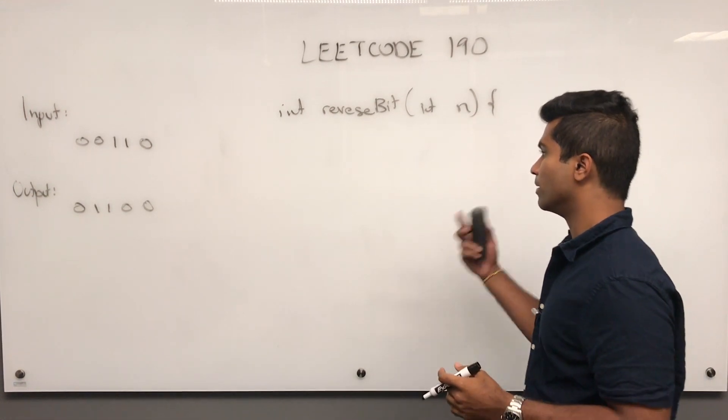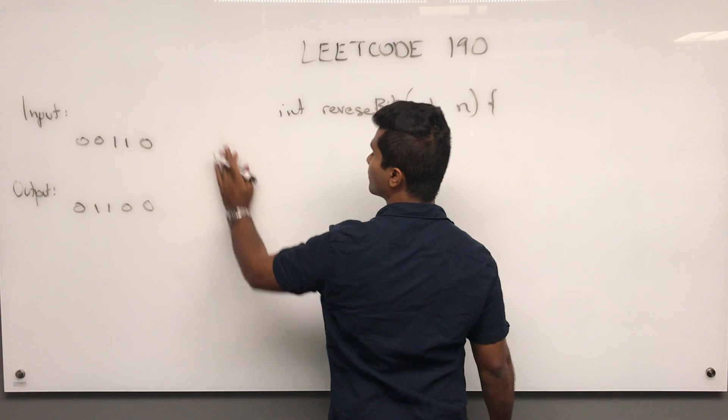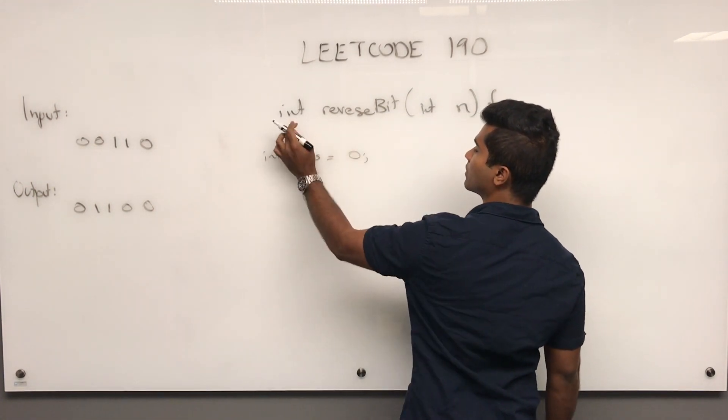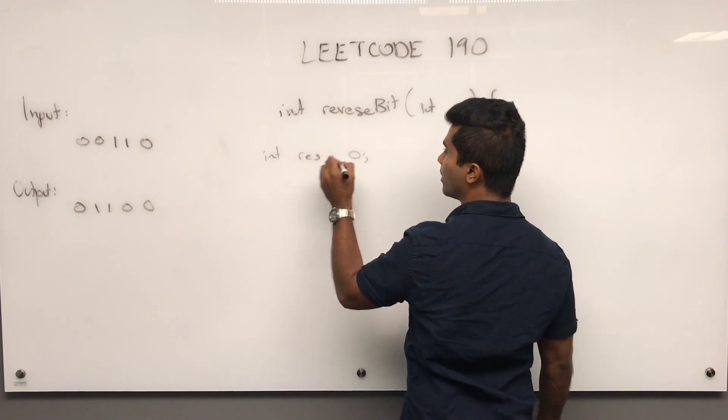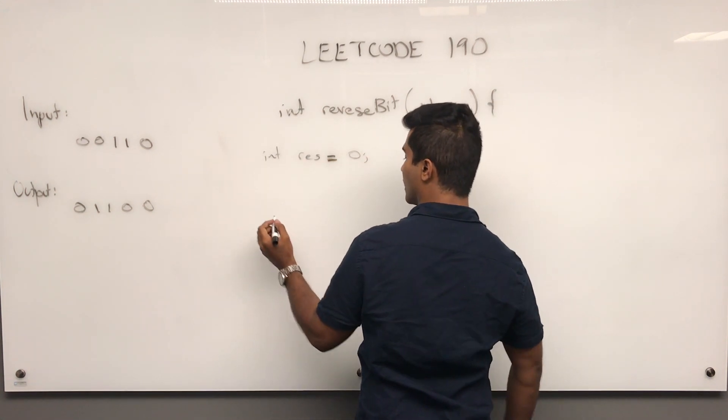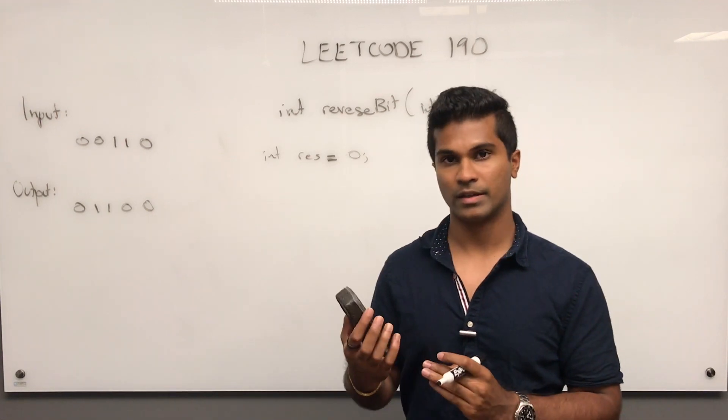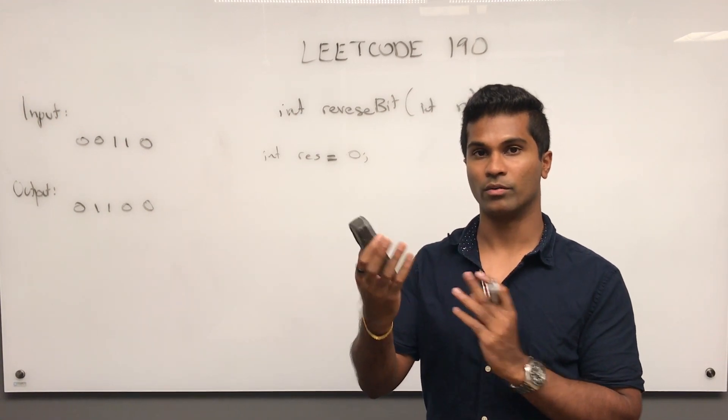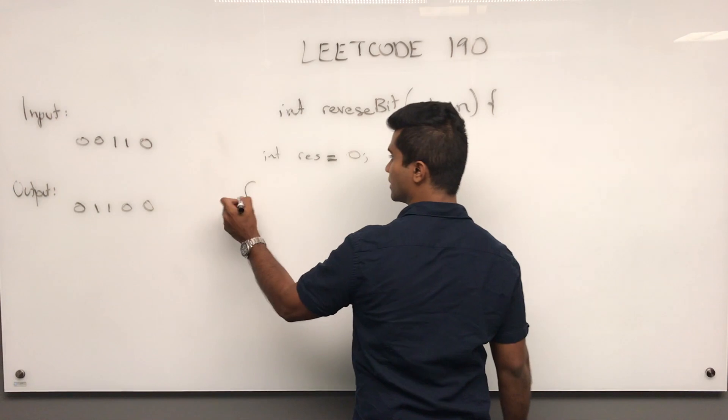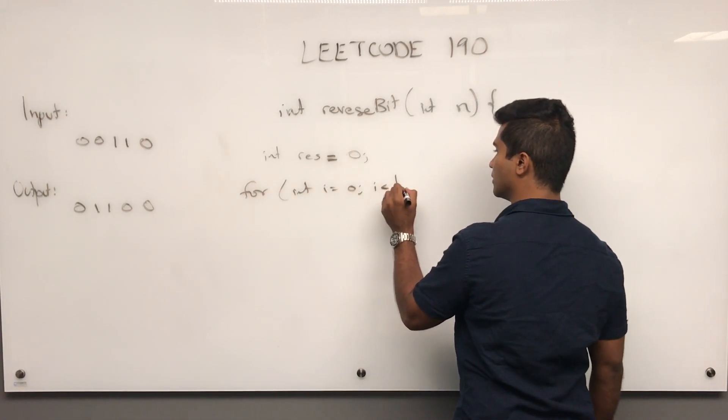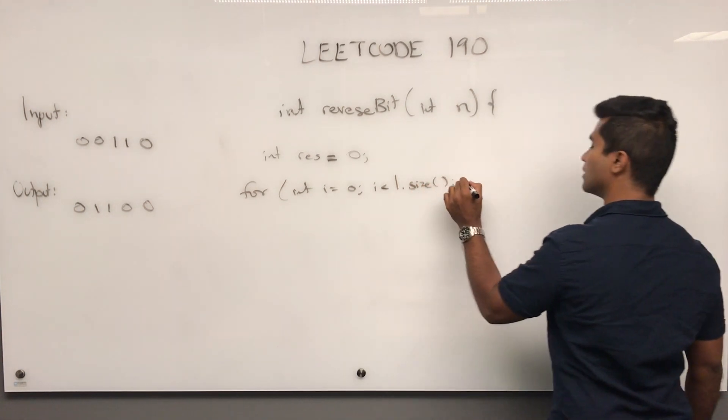That populates our list. Once we're done, we need to rebuild the output. int result is what we return. We saw that the list has the order reversed, so: for int i equals 0, i less than l.size, i++.